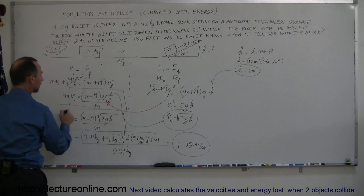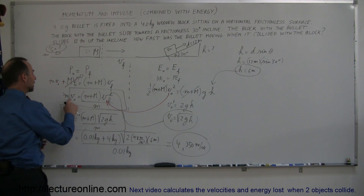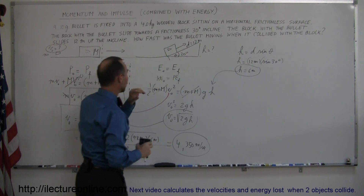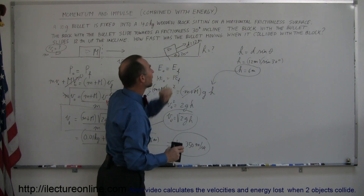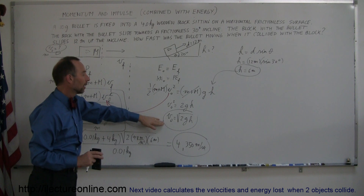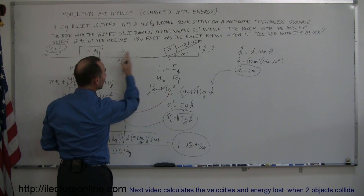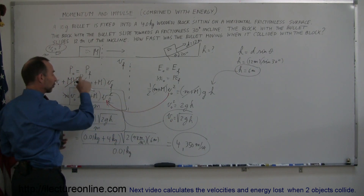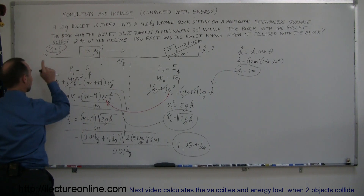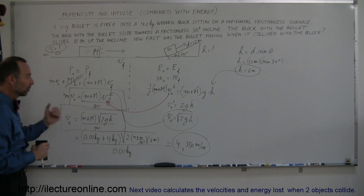The initial velocity of the bullet can be expressed in terms of the final velocity of the block and bullet after the collision. Since we don't know either, we use the second part of the problem: the block and bullet slide 12 meters up the incline, so using conservation of energy we find the initial velocity of the second part — which equals the final velocity of the first part — and plug it in to solve for the bullet's initial velocity. That's how you do these types of problems.